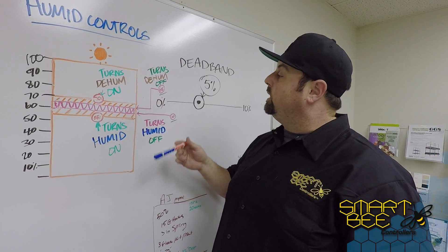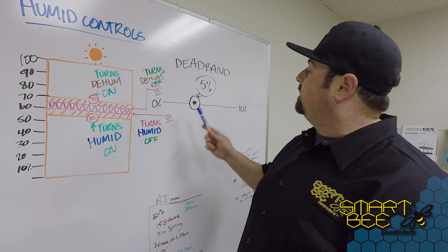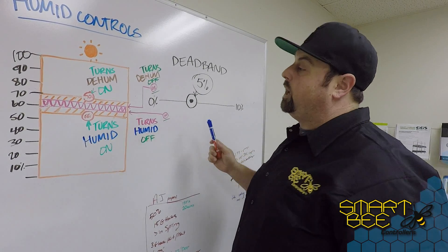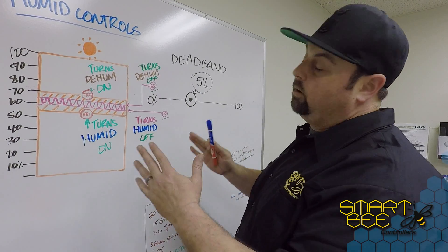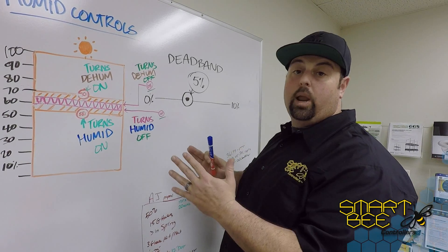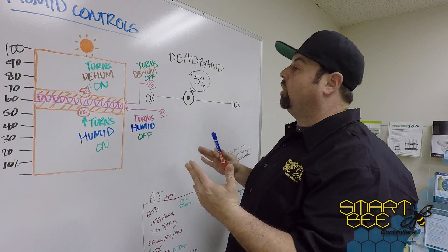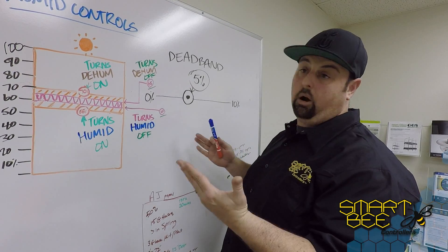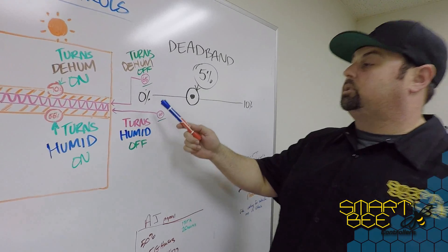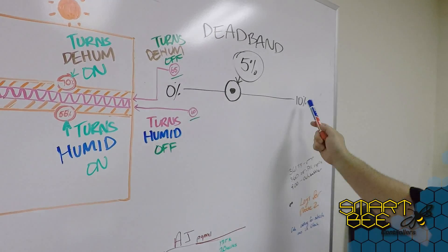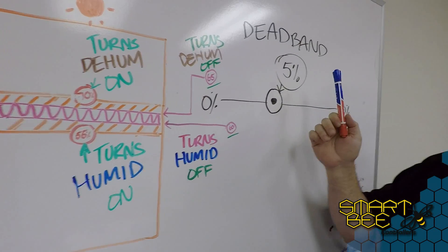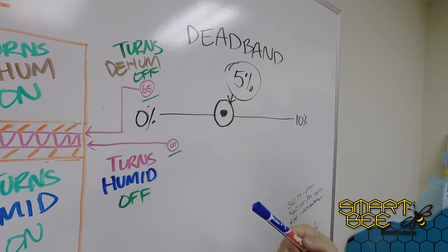So what we did was we created this dead band setting to allow you to have a wider or more narrow range by which you want to maintain your garden. You can see here it does go from 0 to 10 percent. In this case we set the dead band at 5 percent.